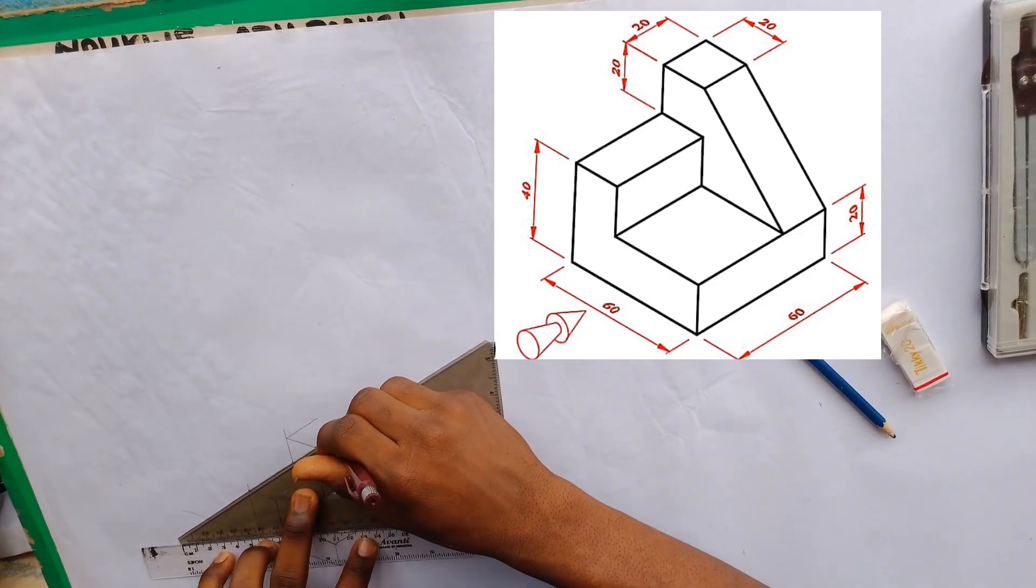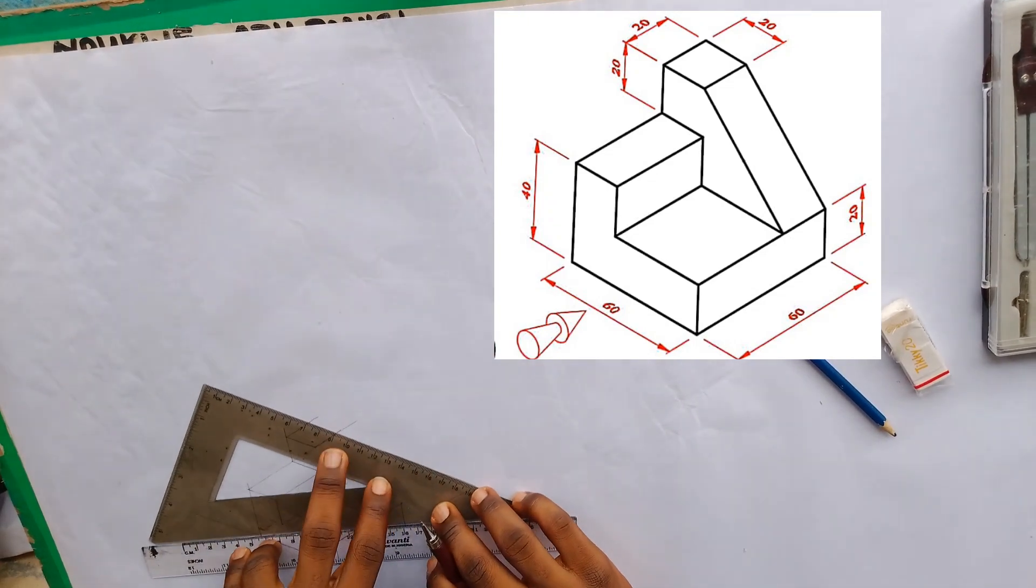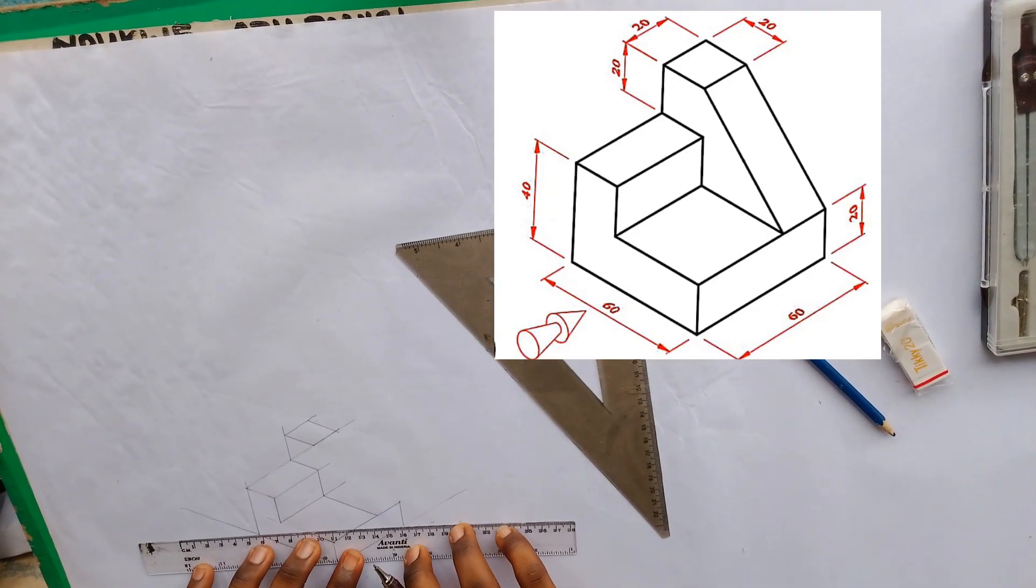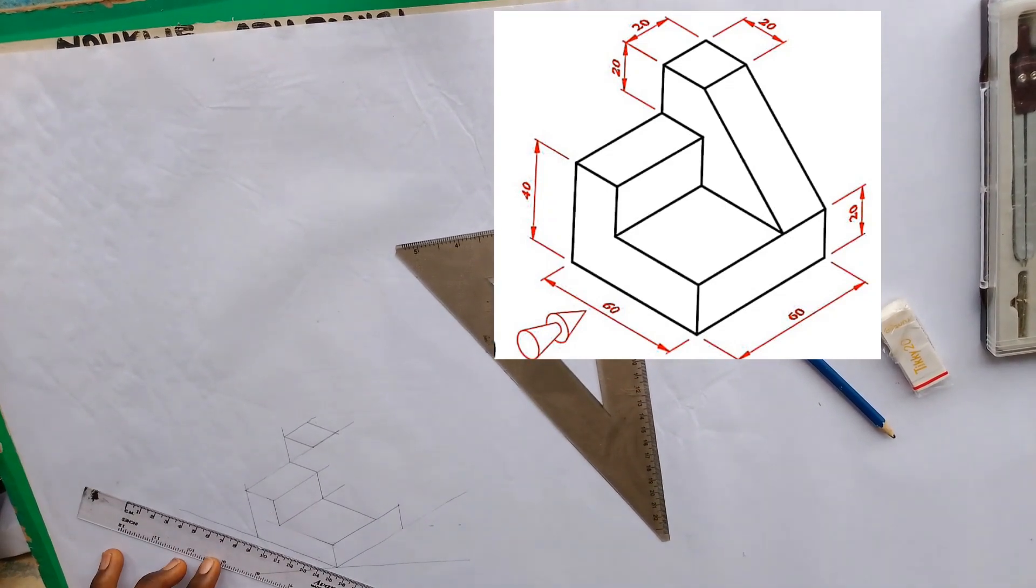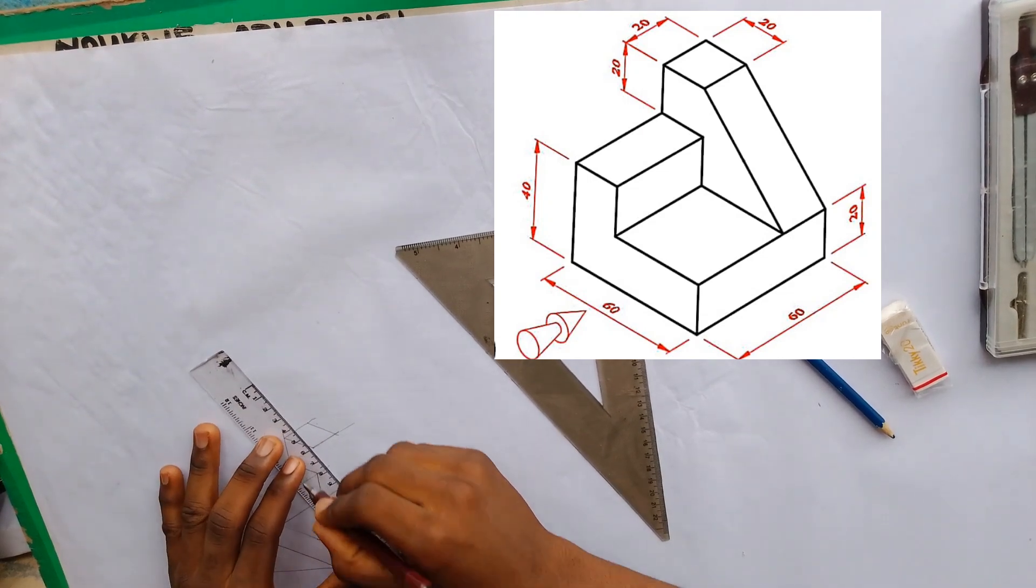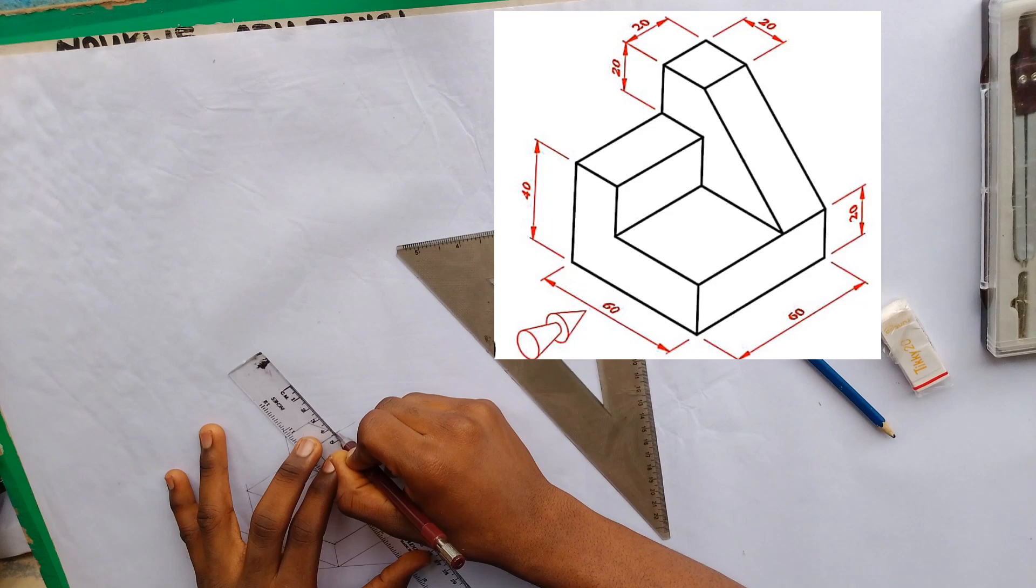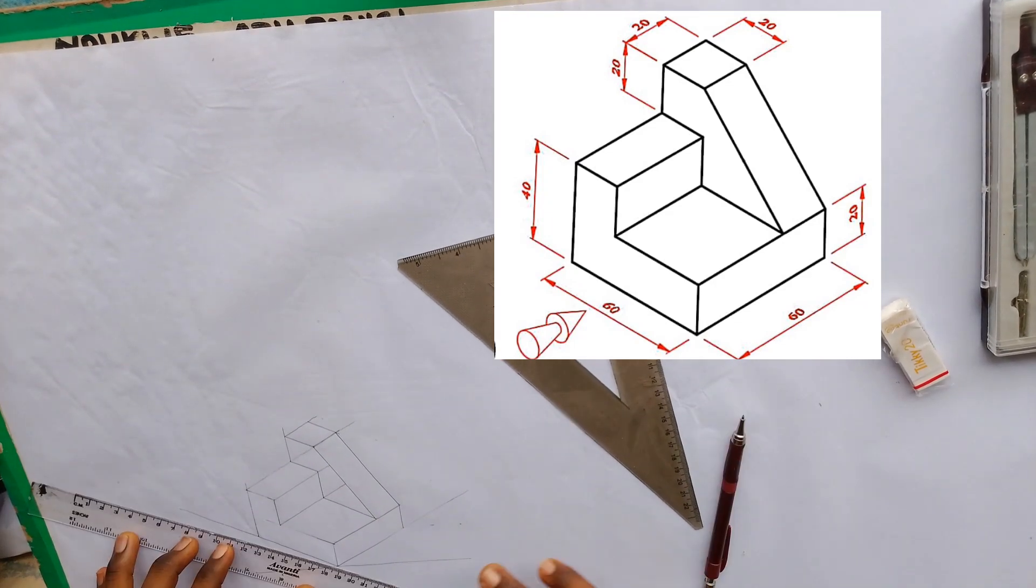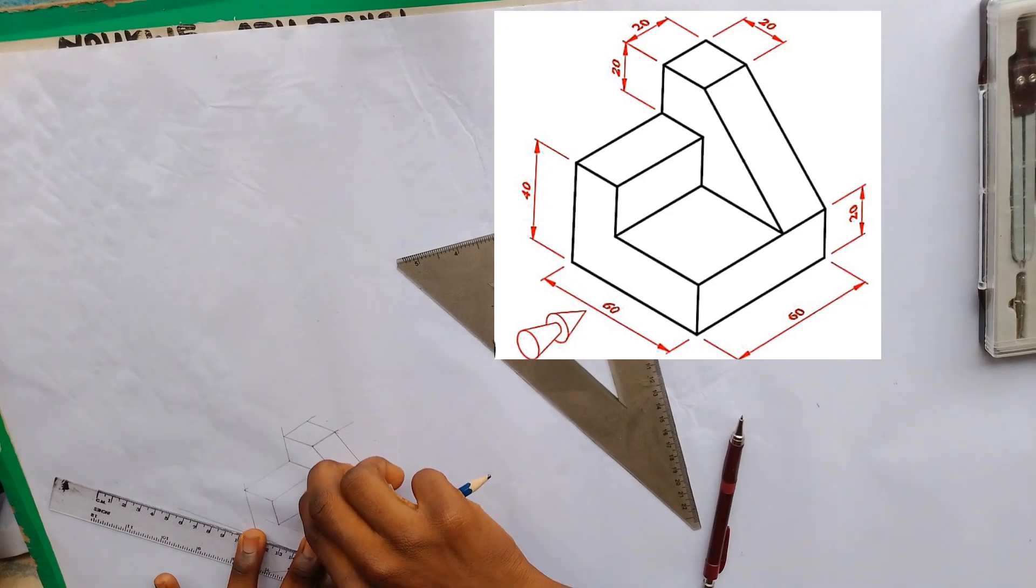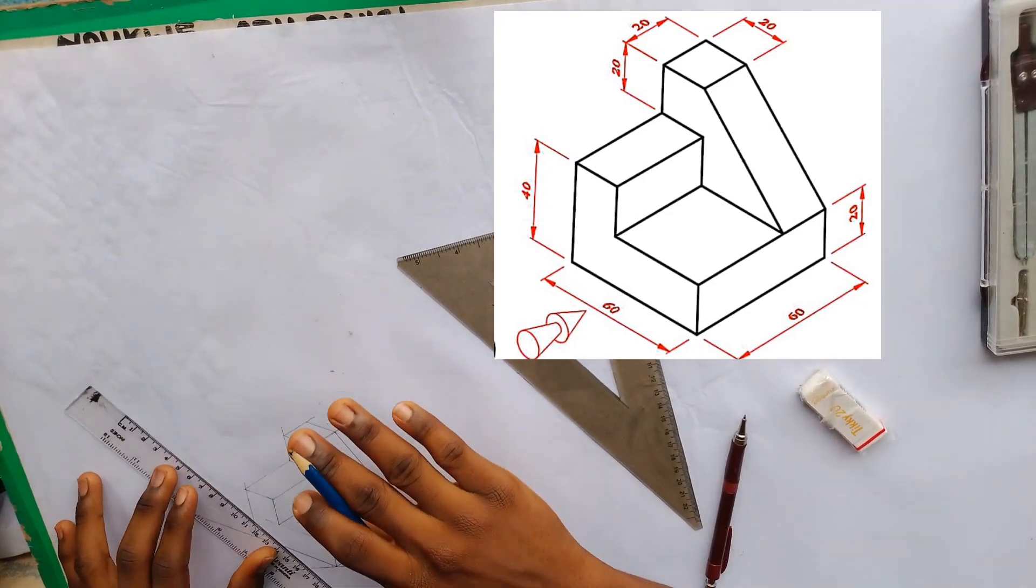From here, we draw another line. And from here, we'll draw a line to cut that original line. The last thing we'll do would be to join these two points together. Next, we'll make our work bold.